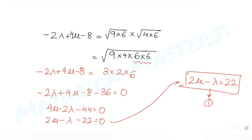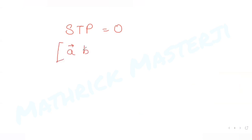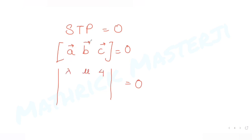Now for the second condition: the three vectors are coplanar. When three vectors are coplanar, their scalar triple product equals zero. This means the determinant of the matrix of their coefficients equals zero. For vector a: (λ, μ, 4); for b: (−2, 4, −2); for c: (2, 3, 1).